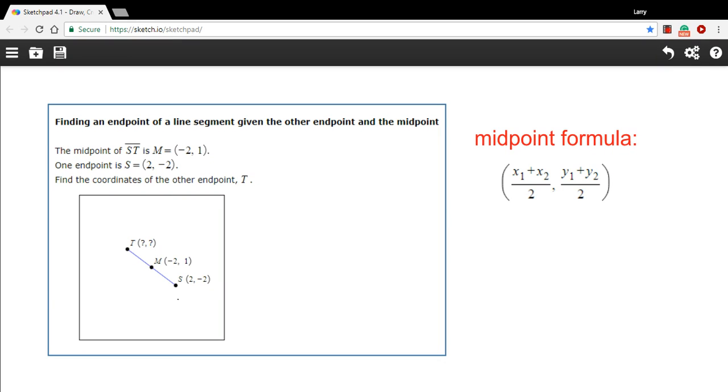In this problem, we're being given a line segment with one endpoint, we've got the coordinates for that, a point that we're told is the midpoint, and we've got the coordinates for that, and then another endpoint, and we're supposed to find the coordinates of that endpoint.